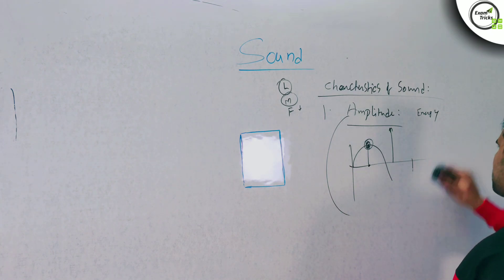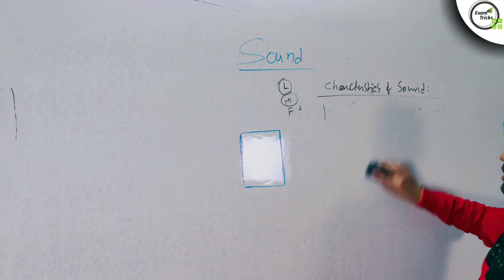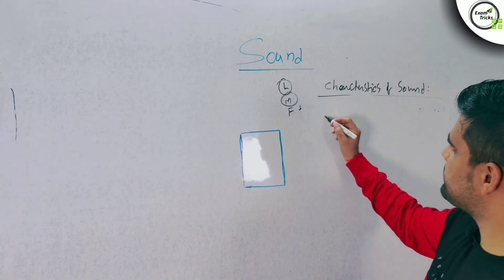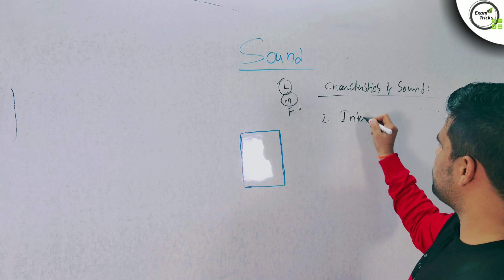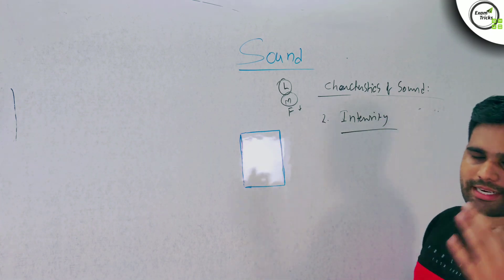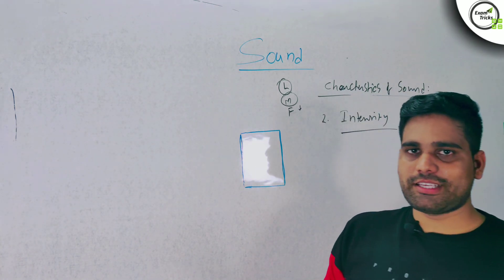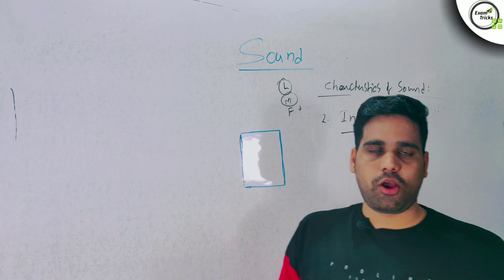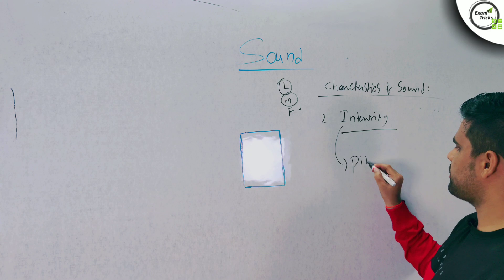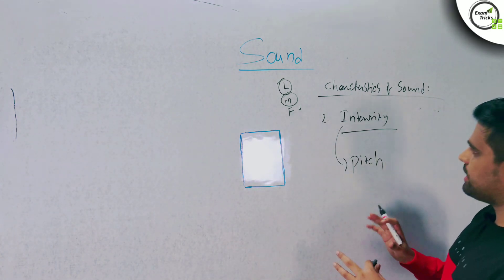Next thing: amplitude is related to intensity. What do you do with the intensity? The intensity is basically pitch. Pitch is the same concept — pitch is not that different.